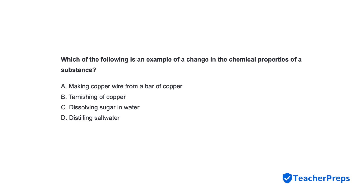Which of the following is an example of a change in the chemical properties of a substance? Correct response is letter B: Tarnishing of copper.